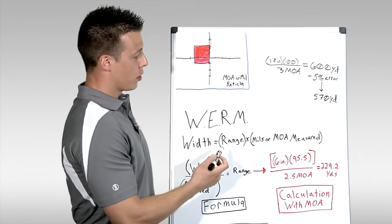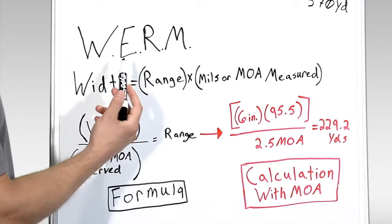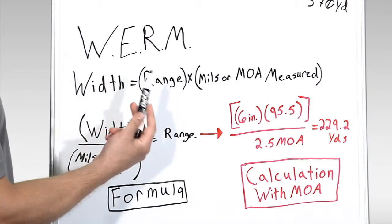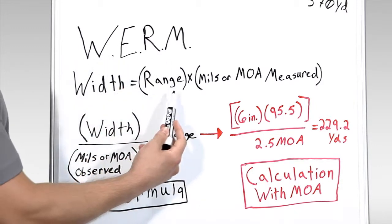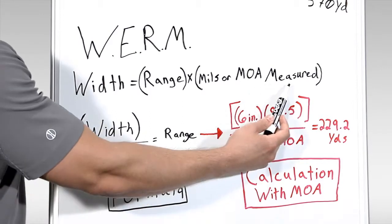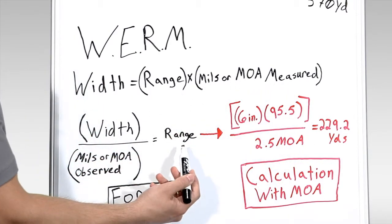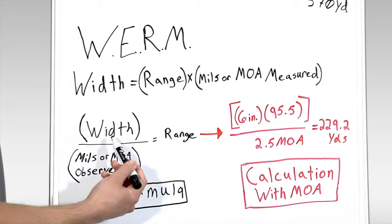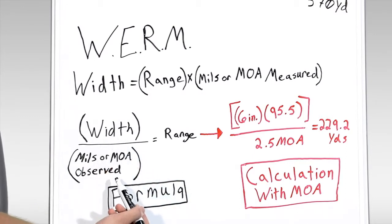So knowing what we know from looking through the rifle scope, we use those values to plug into the WORM equation, where width equals range times mils or MOA measured. In this case, we want to isolate for range. So we get range equals width over mils or MOA observed.